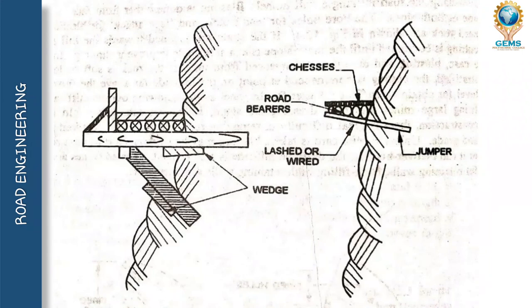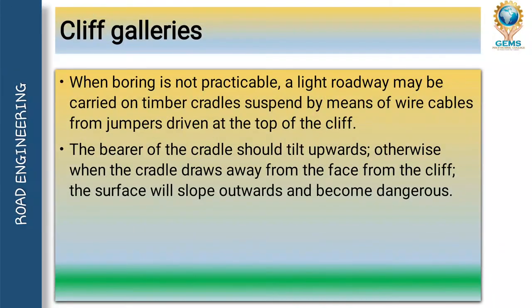As you can see here, there are the changes, the jumper, and road barriers. Here is the lasso or wire, here is the wedge, and this is fixed beforehand — if this is not fixed, it will not have support. By fixing the wedge, it will have support and by this we can go up and up.